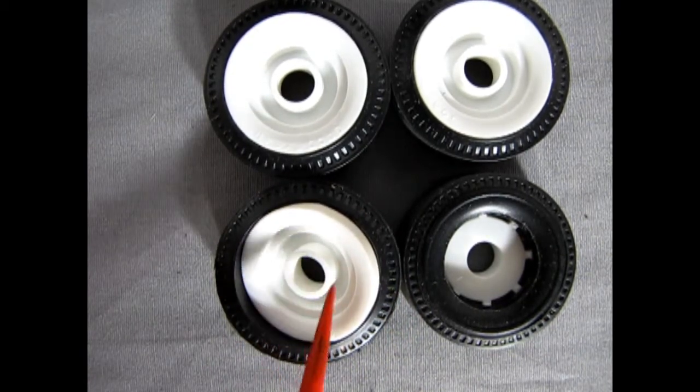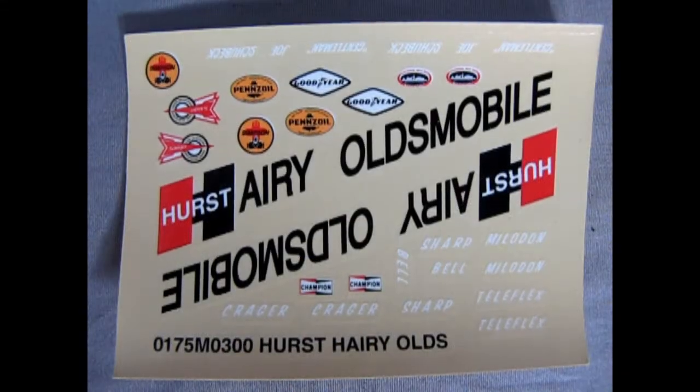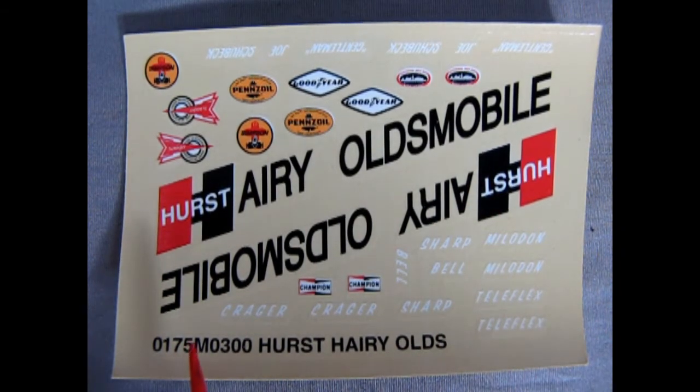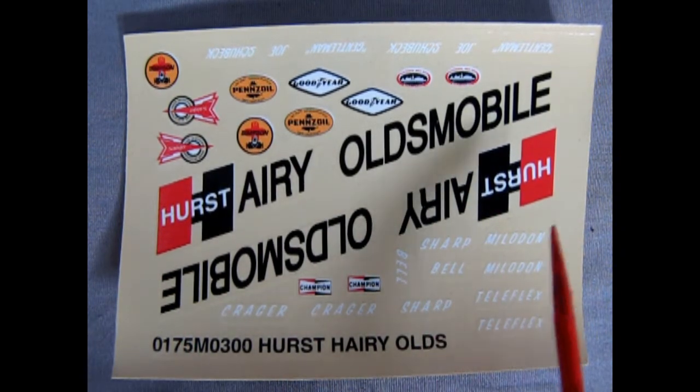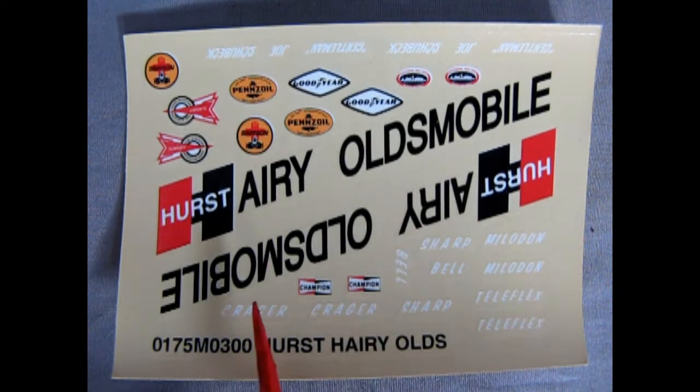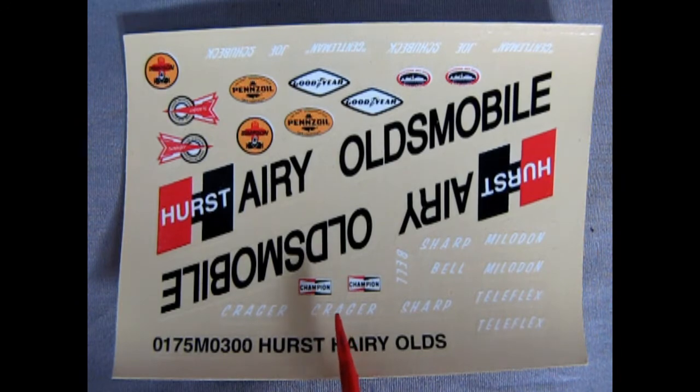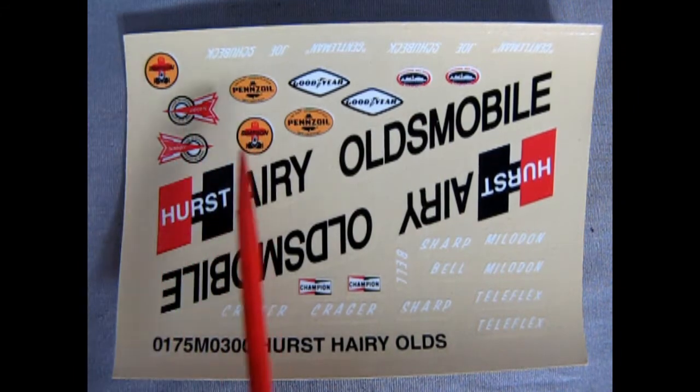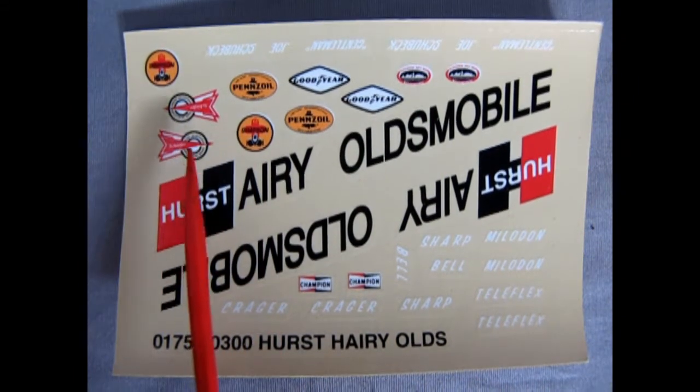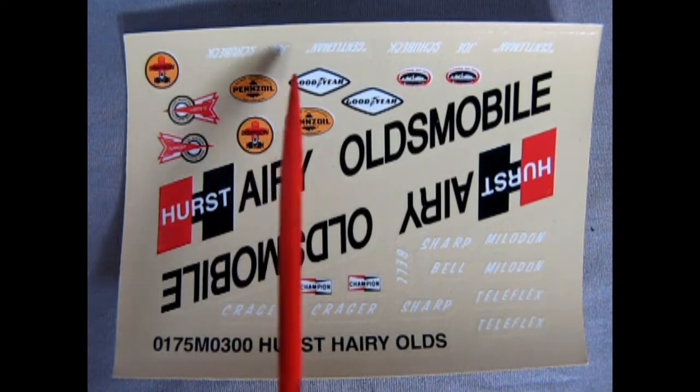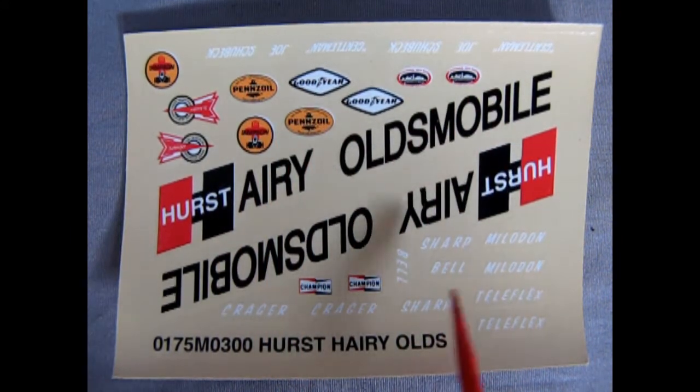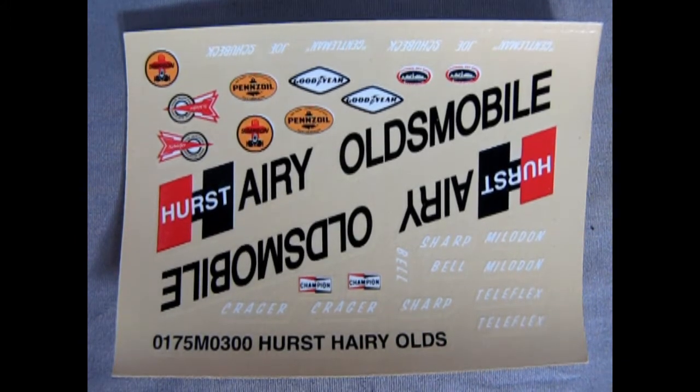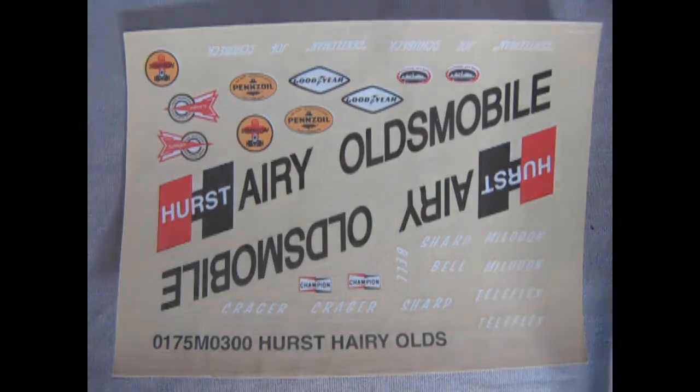And to finish off our review we have the decal sheet. Here you can see the Hurst Harry Oldsmobile, it does look like it's an angle on the instruction sheet but when you center this on the car it's actually sort of italicized. They've got the Champion spark plugs there, Pennzoil, Goodyear. In the white we have different driver names and then down here we have different sponsors so all this will look great on your Hurst Harry Olds once you paint the body and apply the decals.